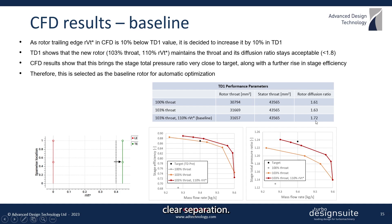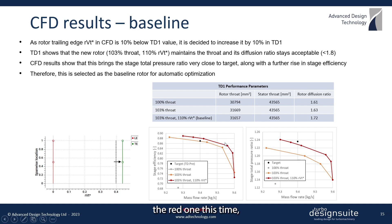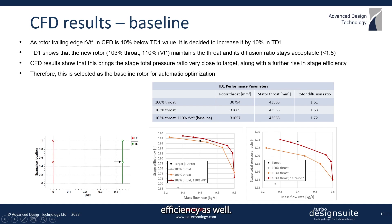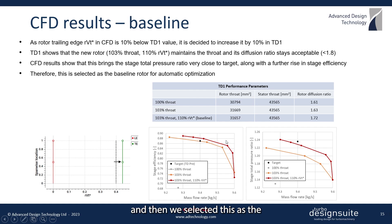Running the CFD curve again — the red one this time — the total stage pressure ratio was actually very close to the design point target, along with a rise in stage efficiency as well. In just a couple of design iterations we achieved a good design, and we selected this as the baseline rotor for the automatic optimization.